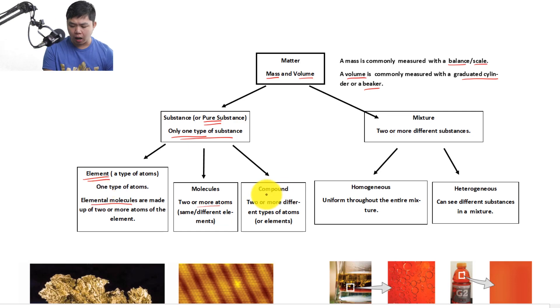Then we have compound. Now compound is very unique. It is considered a molecule as well, but it is unique because it consists of two or more different, that's the key, difference between molecules and compound. A compound will have two or more different types of atoms. So therefore, a compound is a molecule. So all compounds are molecules, but not all molecules are compound, because remember molecules can have two or more atoms of the same element.